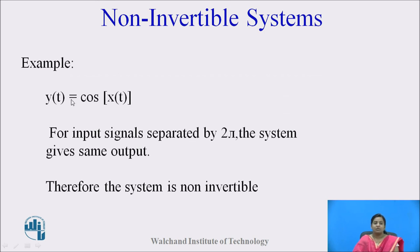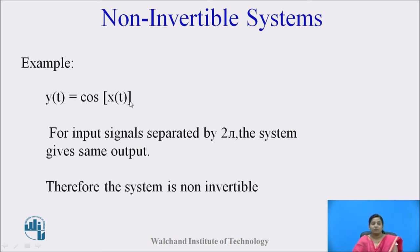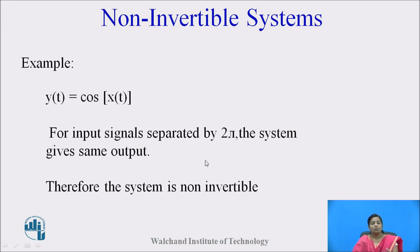Non-invertible systems: consider the example y(t) = cos(x(t)). For input signals separated by 2π, the system gives the same output. In this case, we cannot say the input is recovered at the output, so such systems are called non-invertible systems. To summarize: invertible system means the input is recovered at the output; non-invertible system means the input is not recovered at the output.